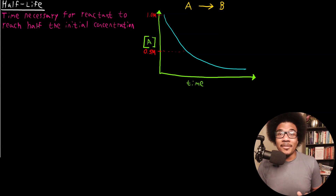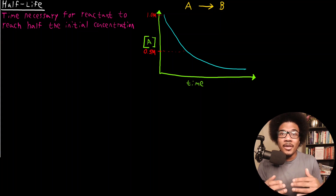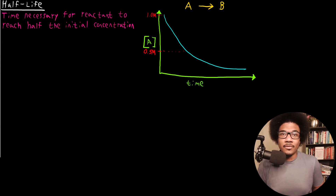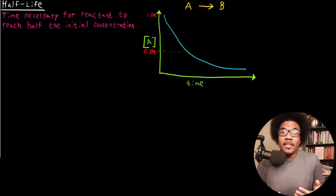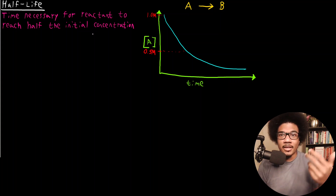The definition of the half-life is the time that it takes for a reactant to reach half of its initial concentration. So, as a reaction progresses, however long it takes for a reactant to reach half of its initial concentration, we call that the half-life. It's going to be measured as a specific amount of time — seconds, minutes, hours, or what have you.